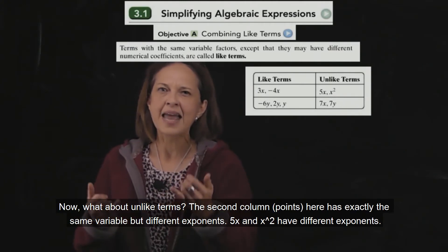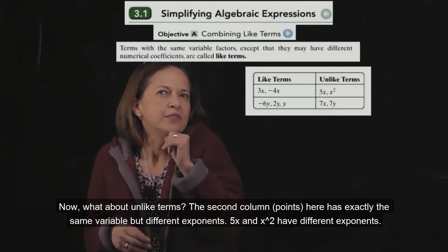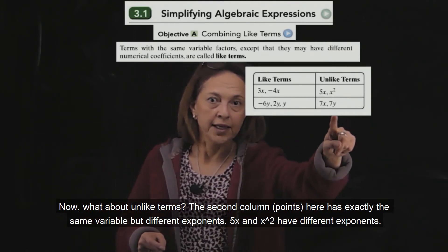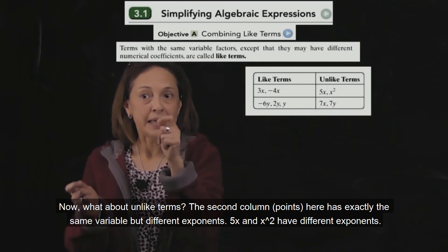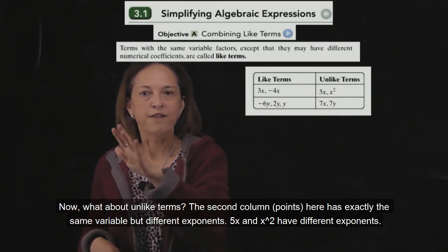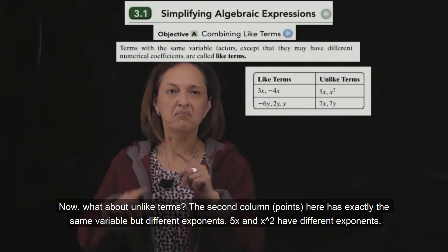Now, what about not like terms? The second column here. We have exactly the same variable but different exponent. 5x and x squared, different exponent.